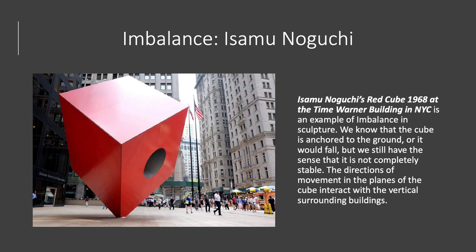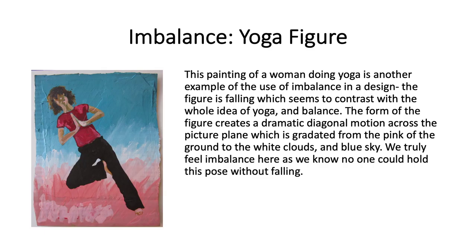The Noguchi work is actually a sculpture, so it has a different feeling, and the different planes and motion of the different sides of the cube interact with all of the angles and planes of the surrounding buildings. In this yoga figure, we see a very extreme example of imbalance because the figure is actually tilting and we know there's no way she could physically be standing that way. It's all in contrast to the whole idea of yoga — about the philosophy of balance in your life and body — set against a gradated background with weight at the bottom of the design.